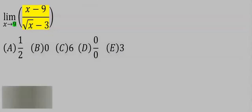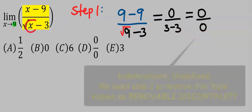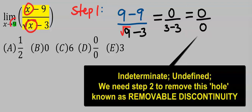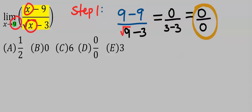Let's consider this question. We are going to find the limit of this function as x tends to nine. Step number one: apply direct substitution. That is, wherever I see x, I'm going to put nine and you see we have zero over zero.